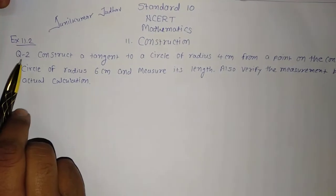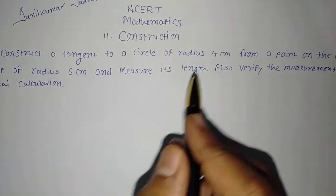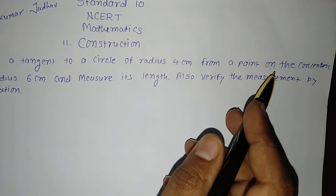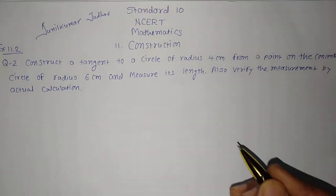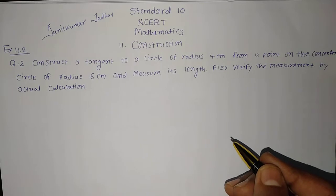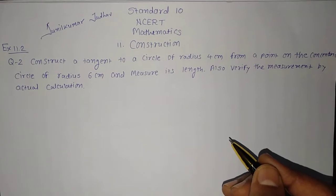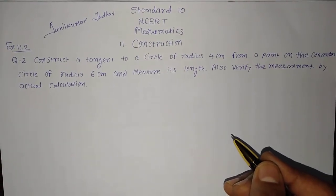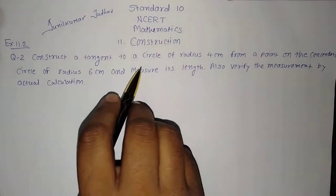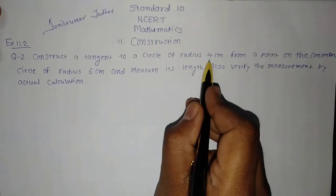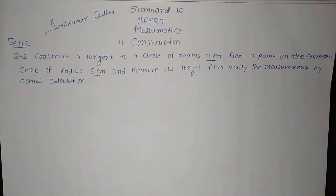Exercise 11.2, question number 2: construct a tangent to a circle of radius 4 cm from a point on the concentric circle of radius 6 cm. The meaning of concentric circles — which you have already learned in the previous standard — is that two circles having the same center but different radii are called concentric circles. So first of all, we have to draw two such circles: one with 4 cm radius and another with 6 cm radius, and measure its length also.